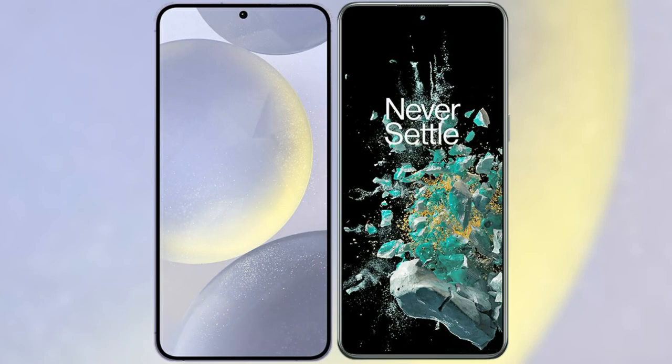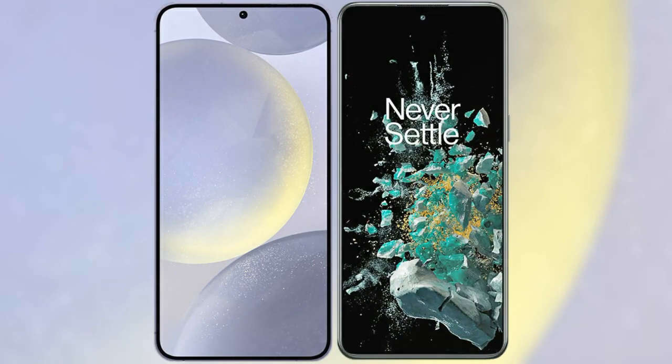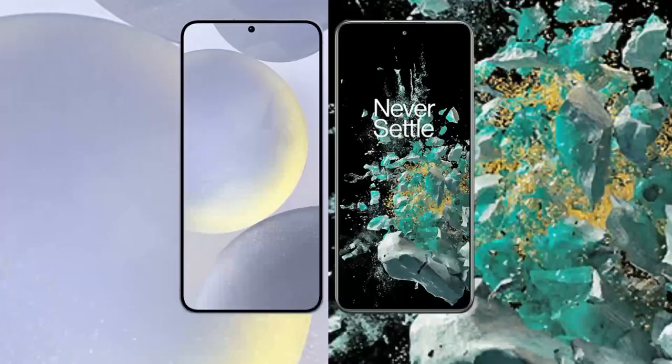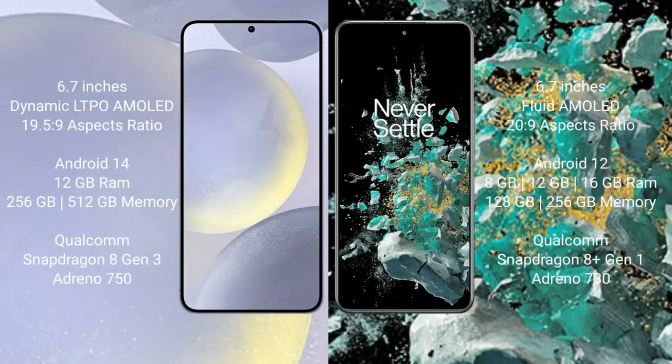I will compare the new Samsung Galaxy S24 Plus with the OnePlus 10T. The Samsung Galaxy S24 Plus comes with a 6.7-inch Dynamic LTPO AMOLED display and a 19.5:9 aspect ratio. The OnePlus 10T comes with a 6.7-inch flat AMOLED display and a 20:9 aspect ratio.